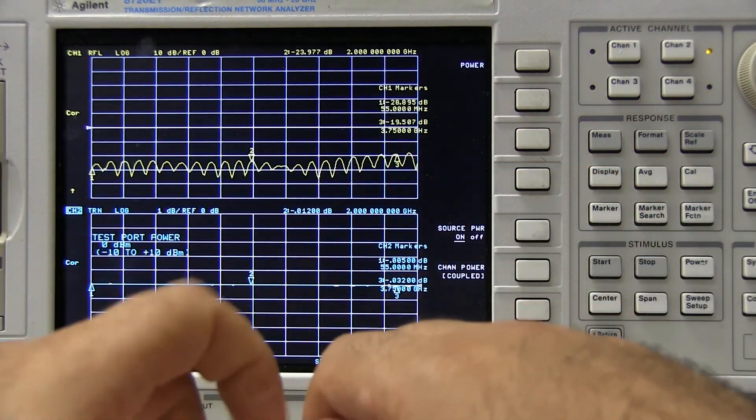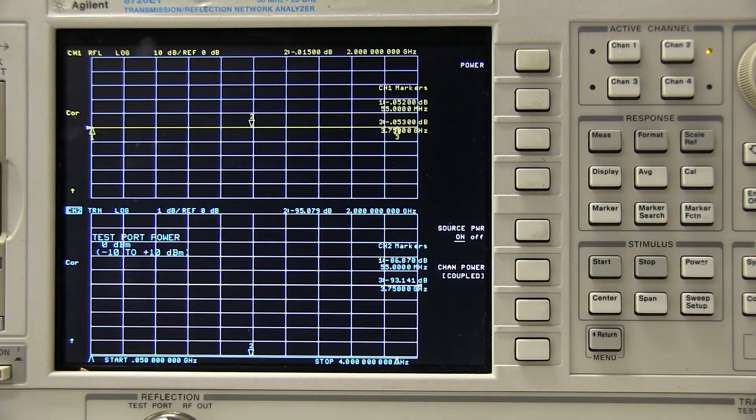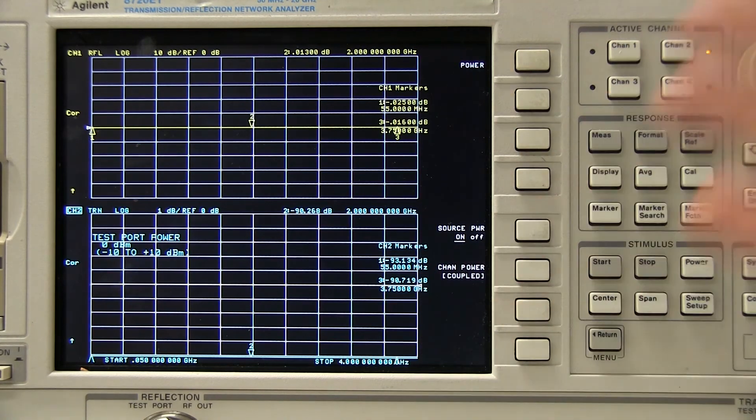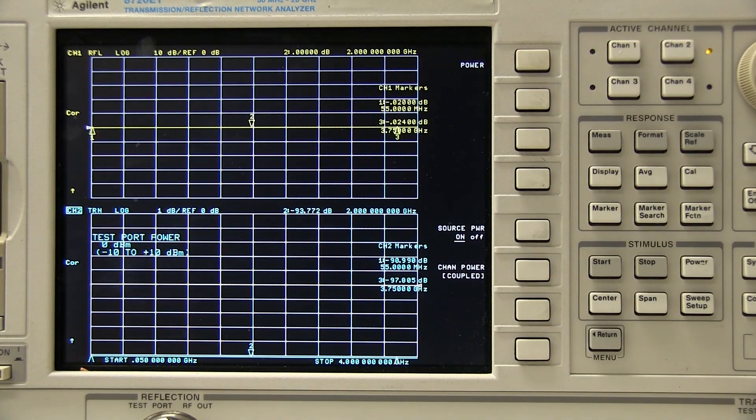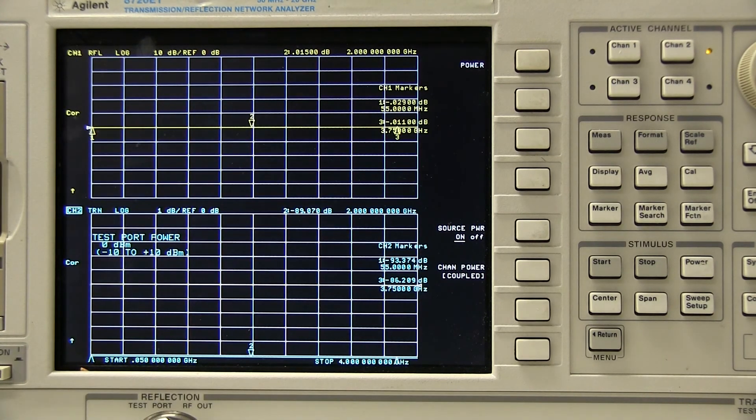And once I disconnect port 1 from port 2 here, you can see that we're reading a very, very low, very, very high level of loss from port 1 to port 2, because they're not connected, negative 90, negative 80 dB. We're at the limits to where this piece of equipment can pick up RF signals.